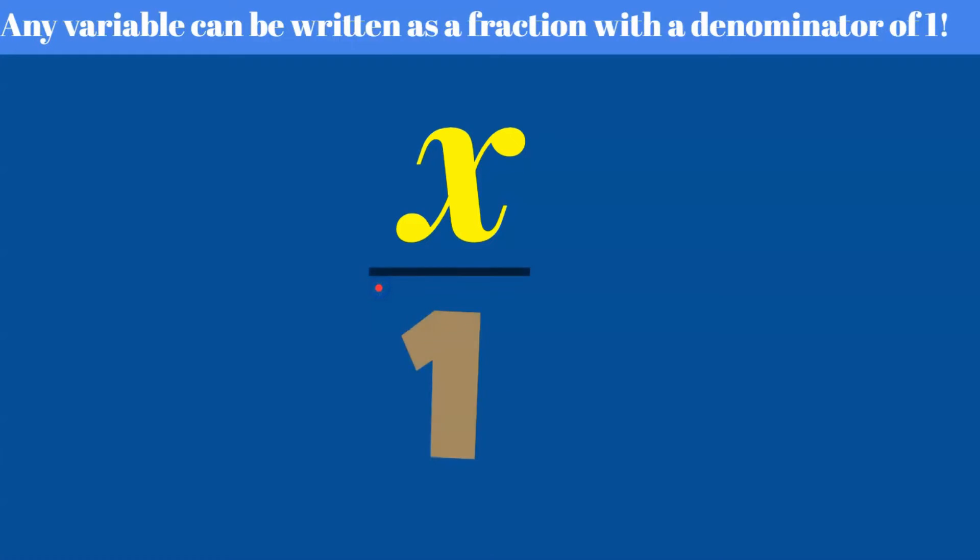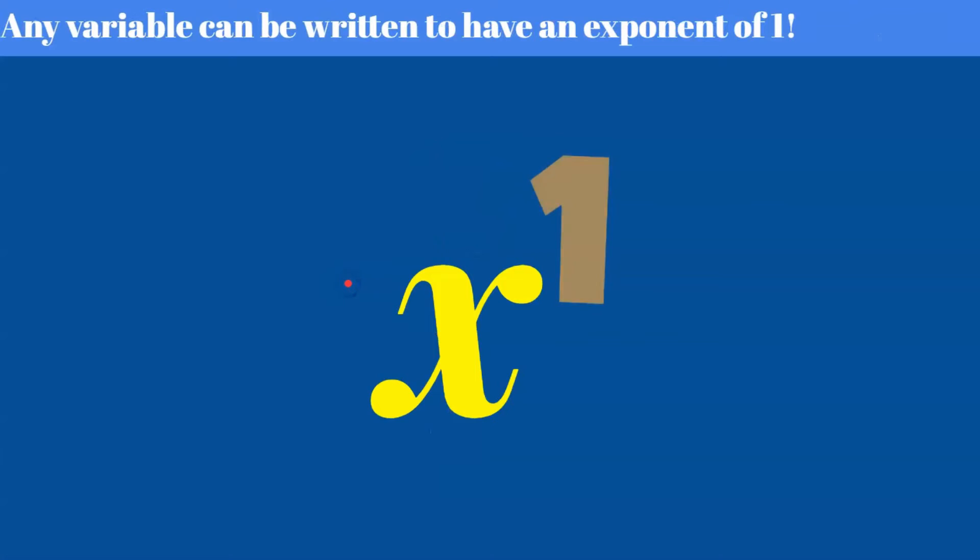So the first is that you could write it as a denominator of one, so whatever x is equal to, the value of x that somebody would give you or you would know, could be written over one.